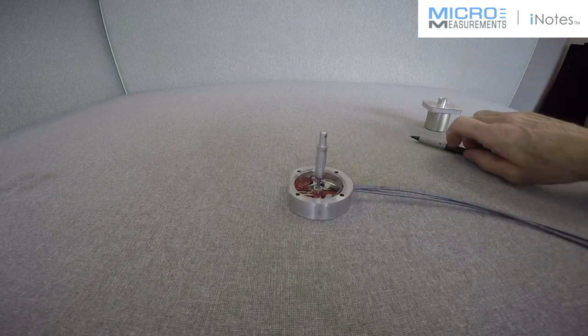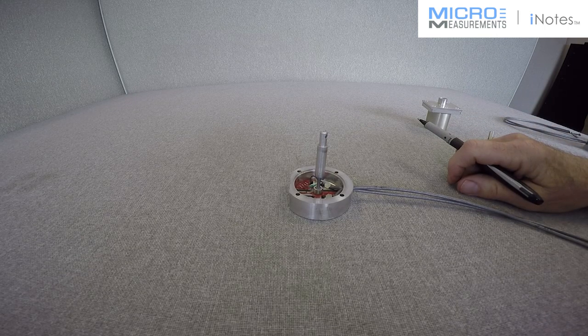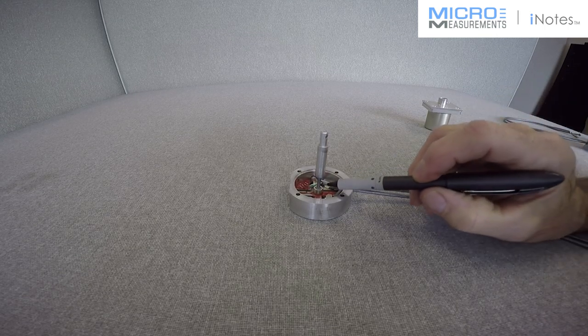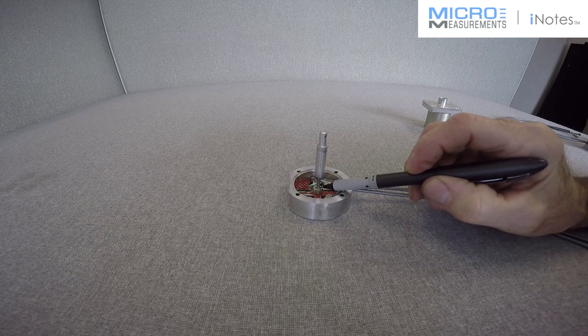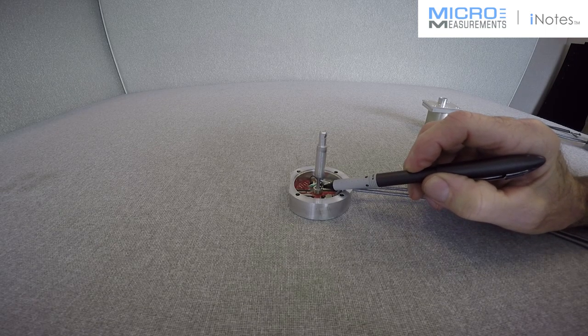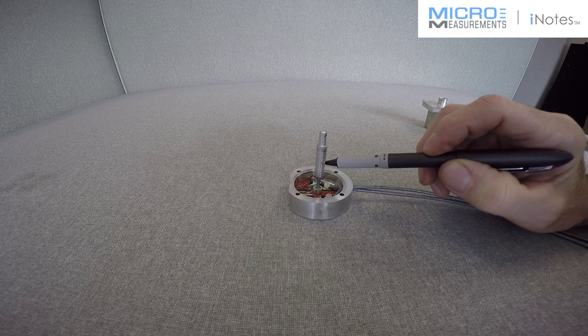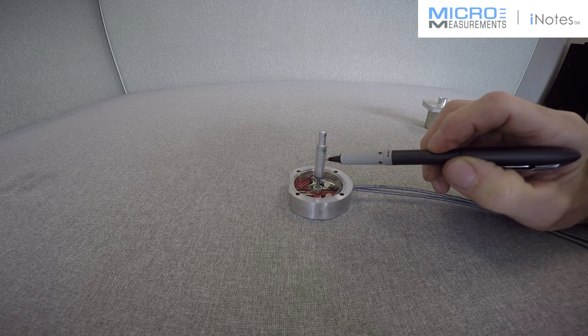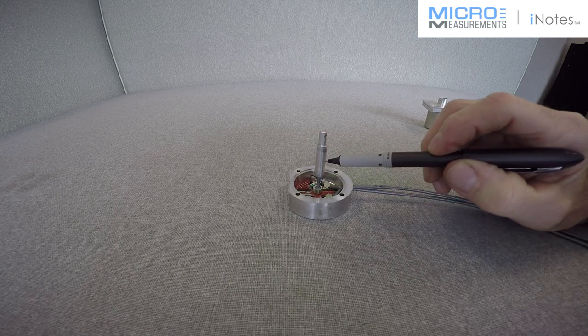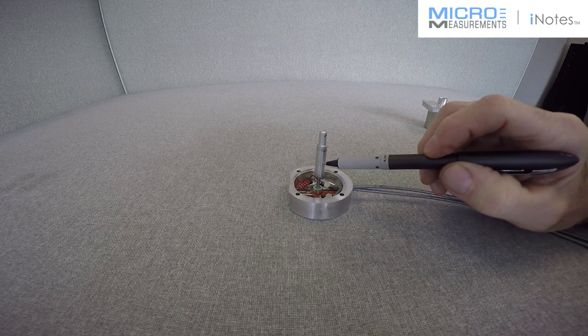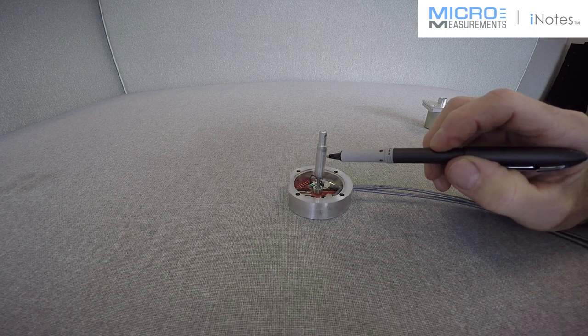To get increased deflection so an overload stop would be functional, we introduced a spring steel wire bonded into the housing here, the bottom section, which went up inside the actuator arm. So we had about a one inch length of spring wire to give us proper deflection.